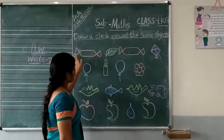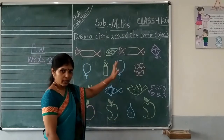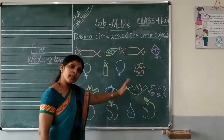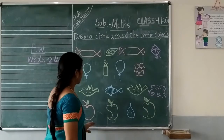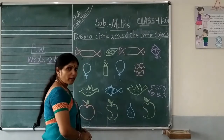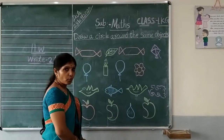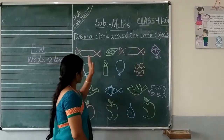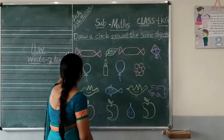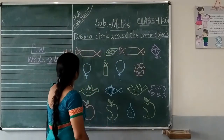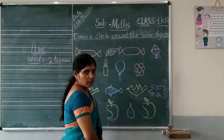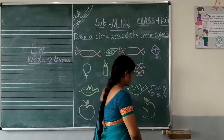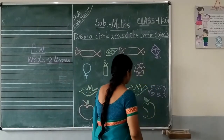Children, these are the objects. These are what? These are the objects. Here, what we should do? We should identify the same objects and circle around the same objects. Okay? Come on children, let's identify the same objects.